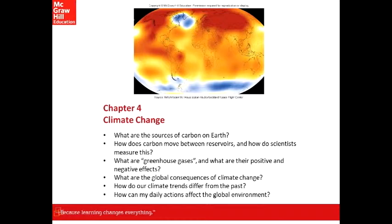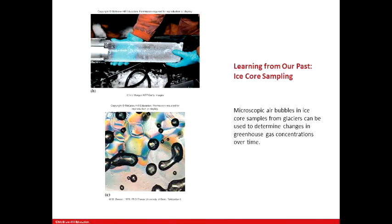One of the questions that comes up is: how do we know that the gases were different now than before? That is what slide 25 teaches — learning from our past ice core samples. This slide is absolutely always on my exams, no matter what. This is important because it answers the question about whether there really is global warming, and how scientists know, since they were not there when it happened.